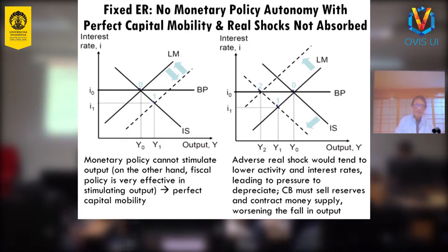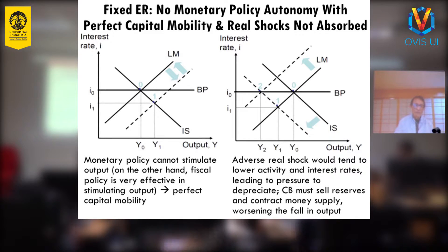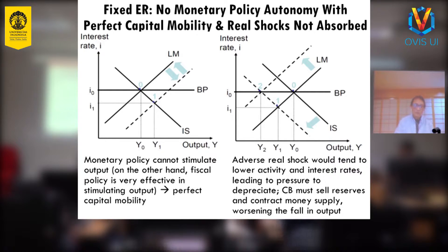So this is your LM and IS curve. This is the case where monetary policy cannot stimulate output. Why? Because it's a fixed exchange rate. Under the fixed exchange rate, the exchange rate cannot go down from I0 to I1.